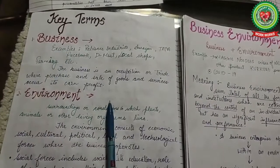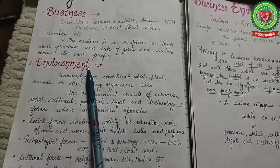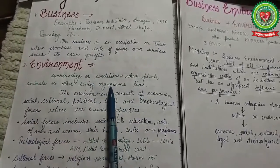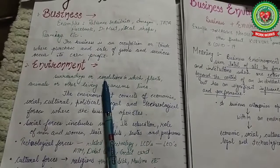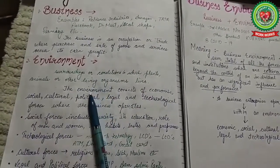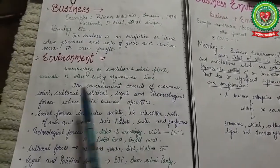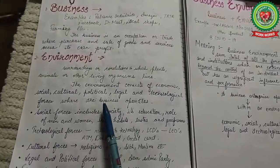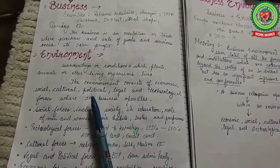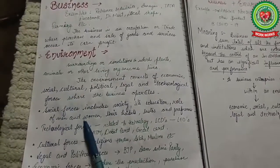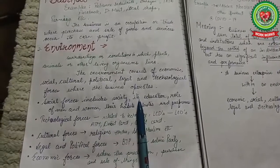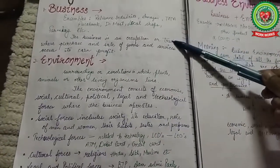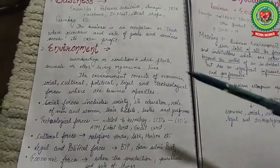The next key term is 'environment.' Simply, environment means the surroundings where we live — plants, animals, and other living organisms. But in the business context, we discuss the economic, social, cultural, political, legal and technological forces of the business enterprise where the business operates. Social forces include factors like education, habits, tastes and preferences of society.